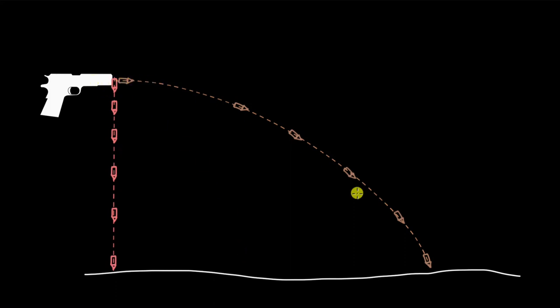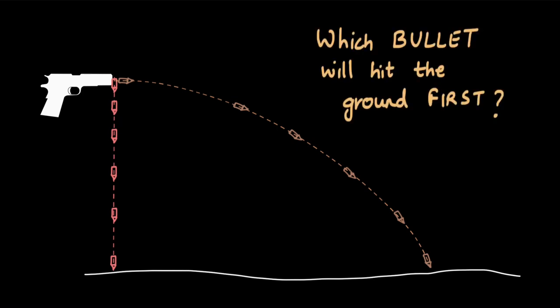A bullet is fired from a gun and a second bullet is just dropped at the same time the first bullet is fired. This first bullet is fired purely horizontally. The question is to figure out which bullet will hit the ground first. This is a question that we will answer in this video.